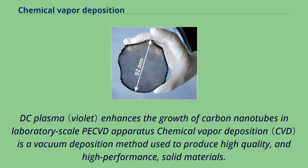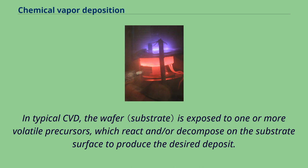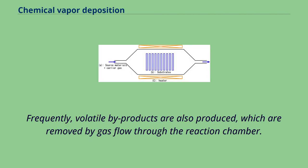DC plasma enhances the growth of carbon nanotubes in laboratory-scale apparatus. Chemical Vapor Deposition is a vacuum deposition method used to produce high-quality and high-performance solid materials. The process is often used in the semiconductor industry to produce thin films. In typical CVD, the wafer is exposed to one or more volatile precursors, which react and/or decompose on the substrate surface to produce the desired deposit. Frequently, volatile byproducts are also produced, which are removed by gas flow through the reaction chamber.